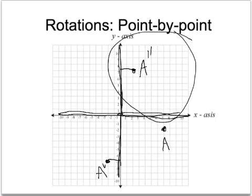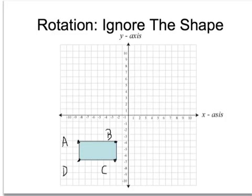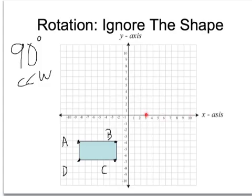Now let's see how that works with a shape. With the shape, I'm really going to ignore the shape itself — I don't care whether it's a rectangle or triangle. What I care about is the points. So let's rotate this rectangle 90 degrees counterclockwise. I know that this shape is going to end up in this quadrant, because I'm rotating it just one quadrant over. I'm going to ignore the shape and just work with my points.